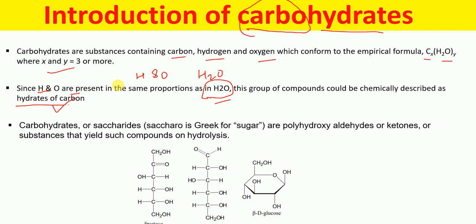So what is the actual definition of carbohydrates? Carbohydrates, or saccharides — 'saccharides' is a Greek word which means sugar — are polyhydroxy aldehydes or ketones, or the substances that yield such compounds on hydrolysis. Examples of carbohydrates are fructose, glucose, and the beta-D-gulose structure. Carbohydrates are polyhydroxy aldehydes or polyhydroxy ketones.